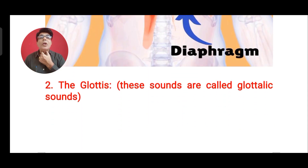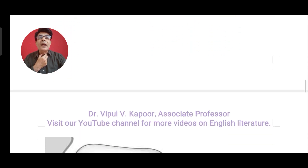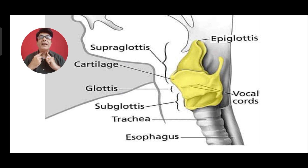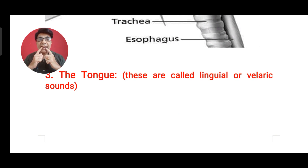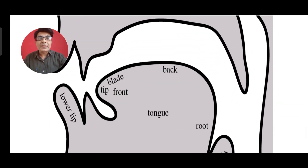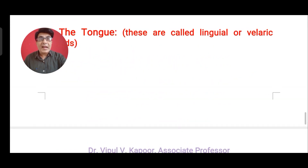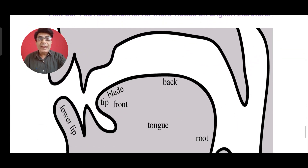The second initiator is the glottis. As you can see in this picture, it is found inside at this place. Some sounds are produced from here — the air comes out from the lungs, but there is some friction here in the glottis, and that sound is called a glottical sound. The third one is the tongue. The sounds which are produced with the help of the tongue and from the mouth are called lingual sounds, and they are also known as velar sounds.